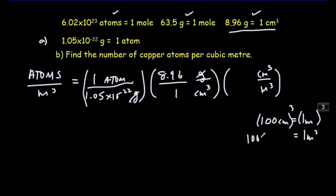1, 0, 0, 0, 0, 0, 0, 0. In other words, 1 million. There's a million centimeters cubed in a meter cubed.